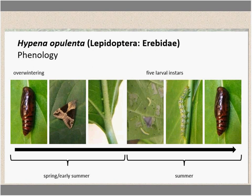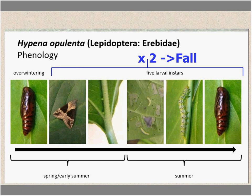A bit of background on the biology of Hypena opulenta: it overwinters as a pupa, that hatches out to a moth in early spring and summer. The larvae go through five larval instars and pupate again. That cycle is repeated — in Canada we think up to a second generation before pupating again and overwintering. It may have more generations as you move further south, but this is something we have to figure out.